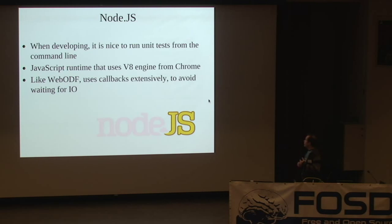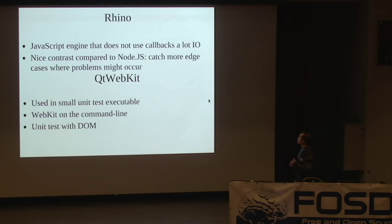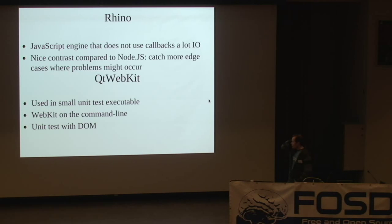I want to say a few things about Node.js, because you want to run unit tests on the command line. Node.js is the V8 engine — the JavaScript engine in Chrome — and it uses callbacks extensively, so it's very good for a server. If you want to implement a server in JavaScript, this is the thing you need. We're also using Rhino — it's a very slow JavaScript engine and doesn't use callbacks, and the reason we're using it is precisely because it's so different: callbacks need special attention, and you need to make sure that if you pass a callback, you don't need its result before you leave the current execution loop. Lastly, we use QtWebKit, because neither Node.js nor Rhino has a DOM, and we'd like to do DOM tests on the command line with a QtWebKit instance running with no user interface.